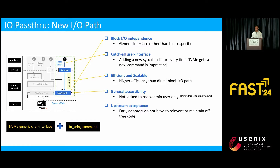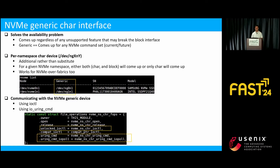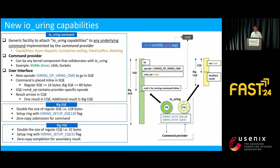The two core elements that make up this path are the NVMe Generic Char Device and the io_uring command. The NVMe Generic Char Interface solves the availability problem we had with the block device — it comes up regardless of any unsupported feature or for any command set. The char device is an additional interface rather than a substitute; for a given namespace, either both block and char will show up, or only char will show up. In order to have scalable communication with NVMe, we added three new capabilities in io_uring: io_uring command, big SQE, and big CQE.